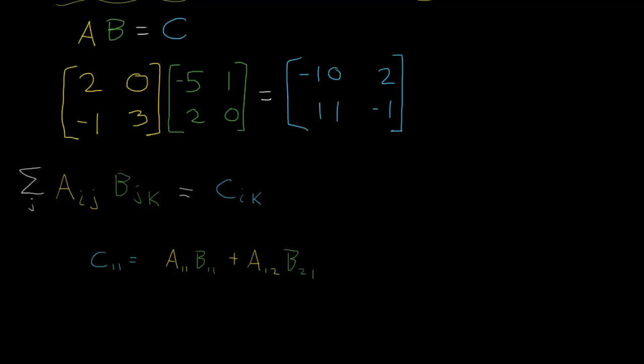So A11 is 2. B11 is negative 5, so times negative 5 here. So we've taken this one, so we've multiplied these two. Times negative 5, and then we're going to add A12. A12, so first row, second column, that's 0. So we're going to add 0, and then we're going to multiply that by B21. B21, so that's the second row, first column, so this 2 here, times 2.